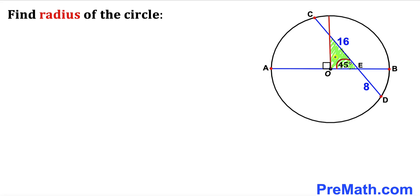Let's focus on this green shaded triangle. We know that this angle is 45 degrees and this angle is 90 degrees, so therefore this third angle has got to be 45 degrees as well, since the sum of angles in a triangle must equal 180 degrees. Let me go ahead and call this side length OE as X units.